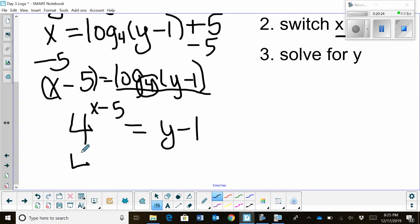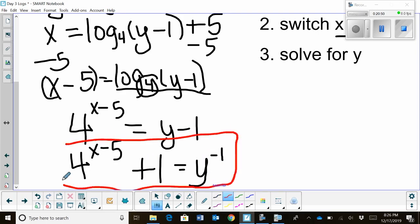So I'm really close to getting the y by itself. All I need to do is move the one. So I'm going to take base of four to the x minus five, and I'm going to add one to it. Now I don't add one to that negative five. That negative five is an exponent. I just keep it as a constant at the back. And then to indicate that this is an inverse, I'm going to put a little y to the negative first on this side over here, and that indicates that is an inverse function.